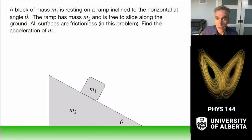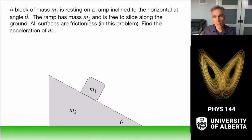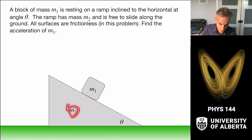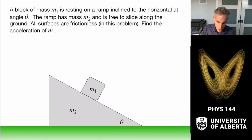The last topic in this video is setting up examples to demonstrate constrained accelerations, which is closely related to something in your homework. The example shows a block of mass m1 resting on a ramp inclined at angle theta. The ramp has mass m2 and is free to slide along the ground. Unlike last week, we allow m2 to move. The sense is that m1 slides down the ramp under gravity, and the effect of that pushes m2 sideways.